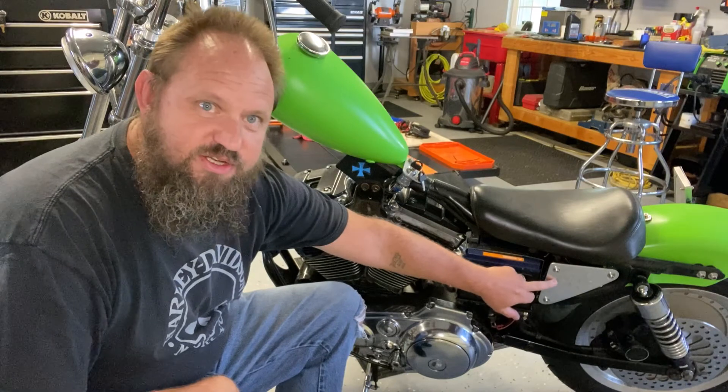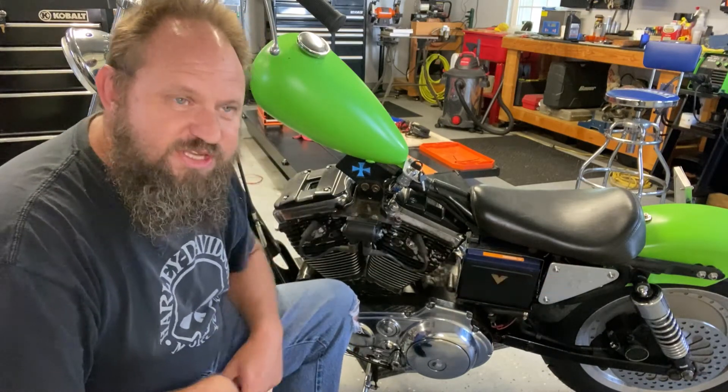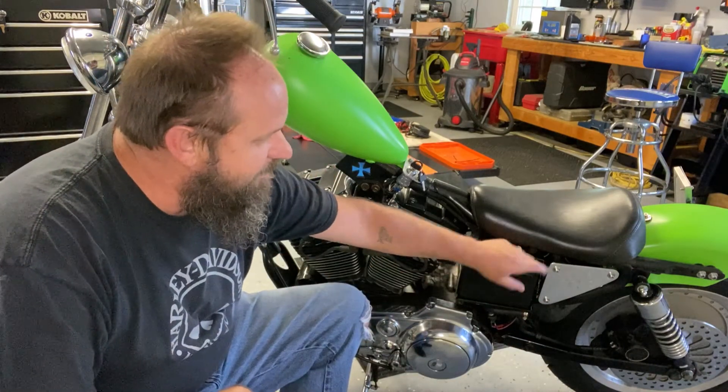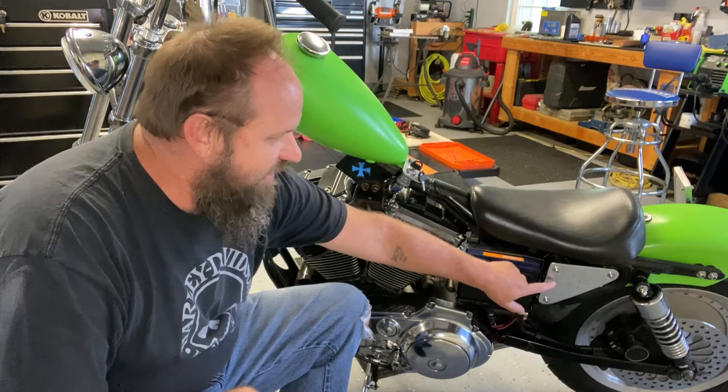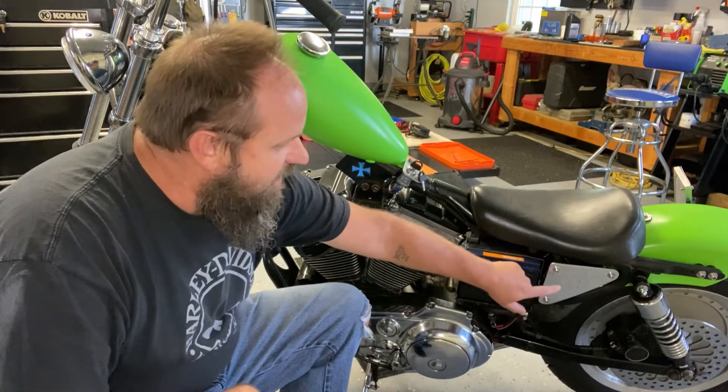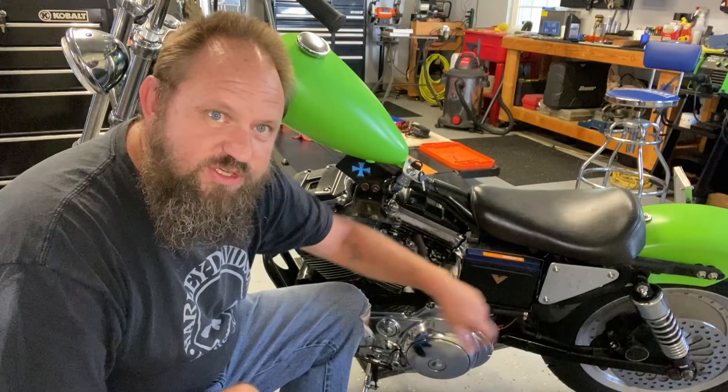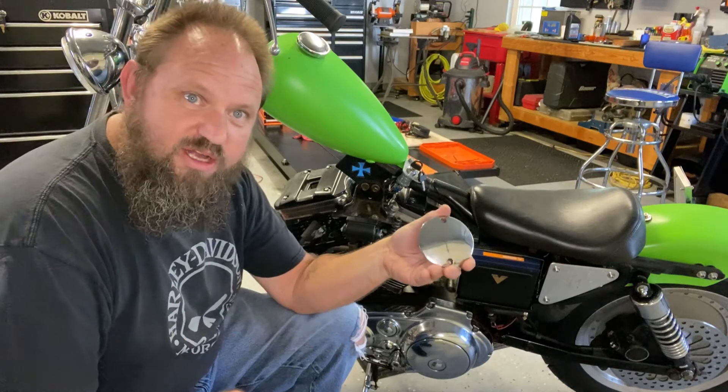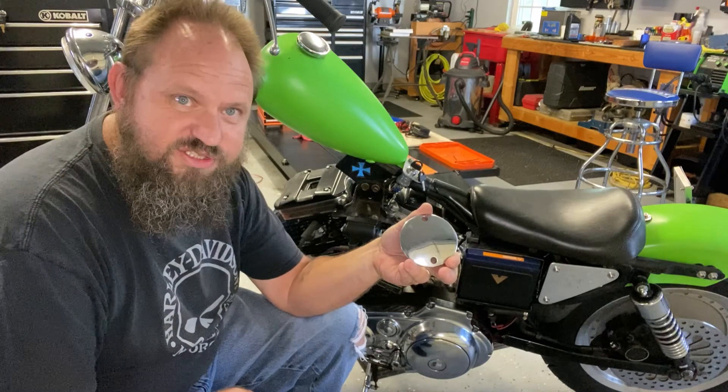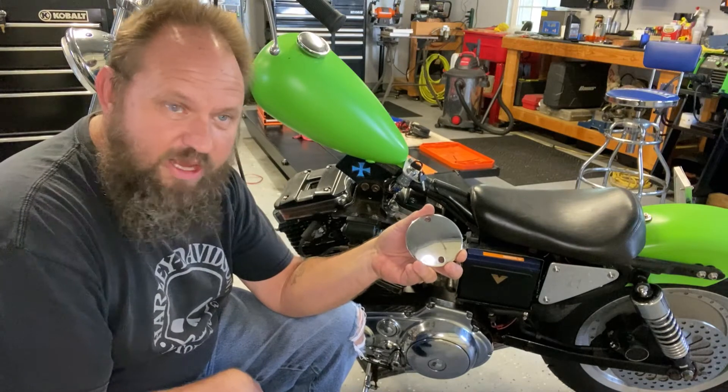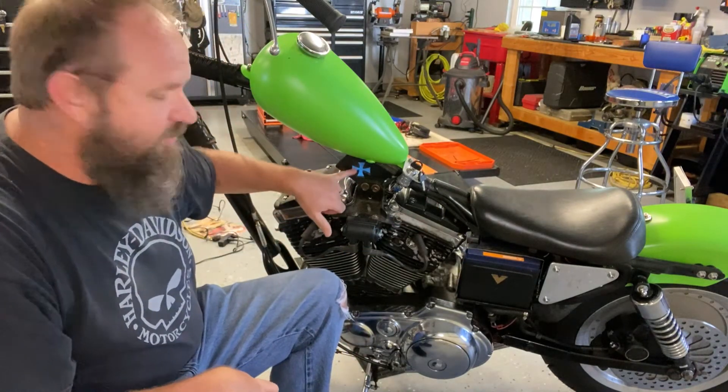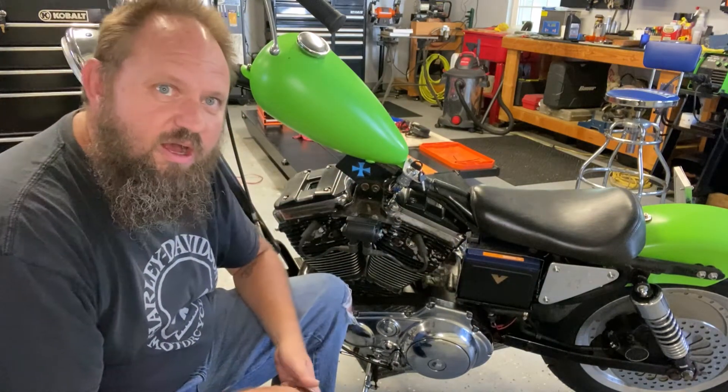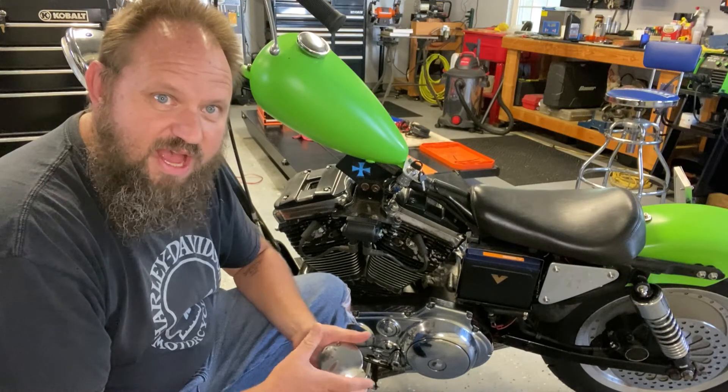I etched a Maltese cross into this aluminum side cover I made. So I just cut this out of a piece of eighth inch aluminum, and then I did this electric etching process to etch a Maltese cross into it. And today, I'm going to use the same process to etch a Maltese cross into the ignition timing cover, which goes on the other side of the bike, to match the Maltese cross here in the frame, the one I put on the side cover, and then the Maltese cross velocity stack that I put on it.